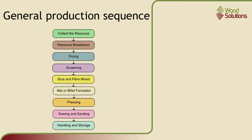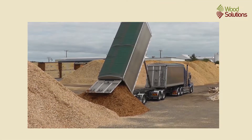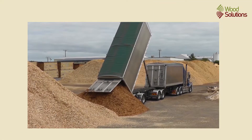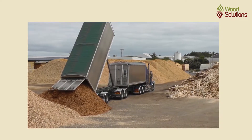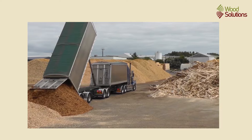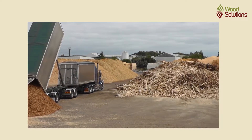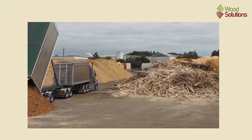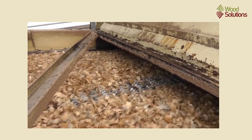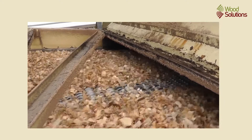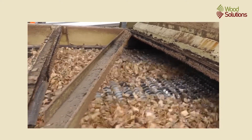The first stage is collecting the resource. Available clean wood in various forms is collected at the panel mill, including small forest logs, wood chips, sawdust and offcuts from local sawmills. Solid material is chipped and then shredders, knife rings and screens are used to break the wood resource into particles or fibres of the size and shape suitable for the intended product.